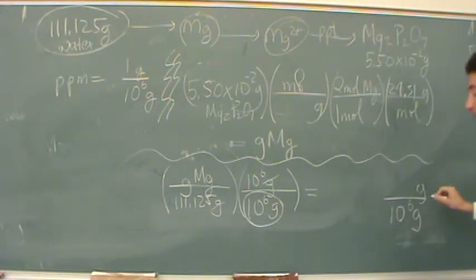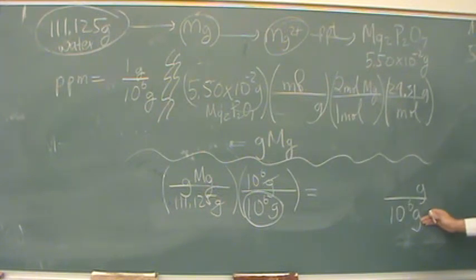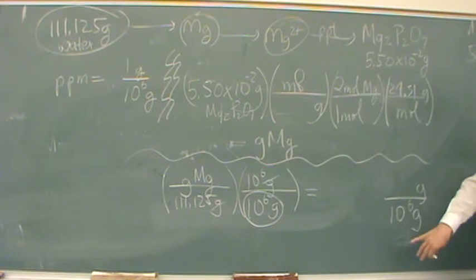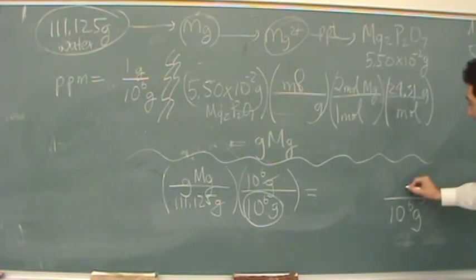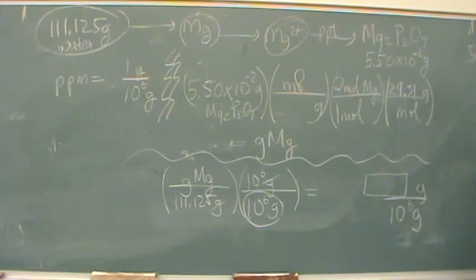So on the top, I'll just have grams of magnesium. On the bottom will be the grams of the water. I'm not going to multiply in that denominator, 10 to the 6th. And so I'm going to get a number right here. I'm not using this number down here in the 10 to the 6th.